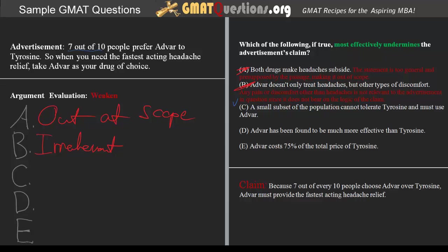Answer D: Advar has been found to be much more effective than tyrosine. Answer D is fairly straightforward — it's claiming that Advar has in fact been found to be much more effective than tyrosine. Whether that means effective in relieving pain or effective in relieving pain faster makes no difference, because answer choice D quite clearly lends support to the passage rather than undermining it. D is incorrect since the statement supports rather than weakens the advertisement's claim.